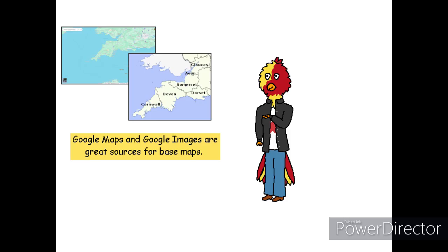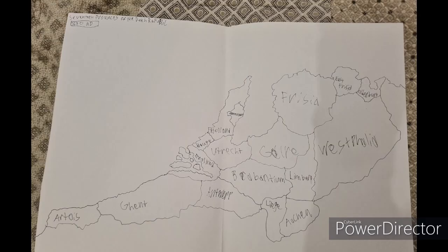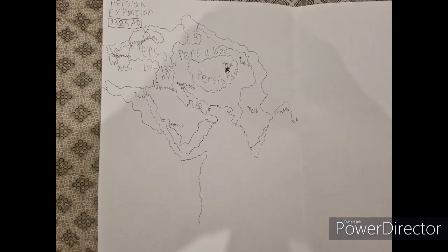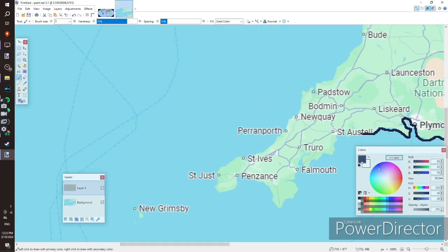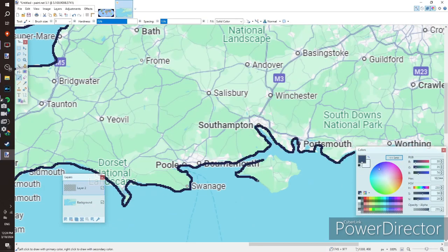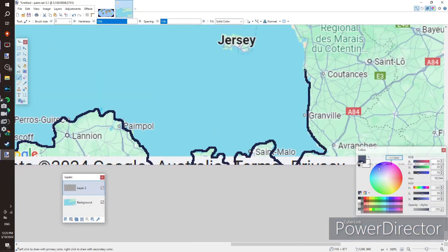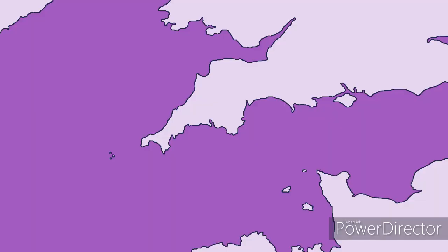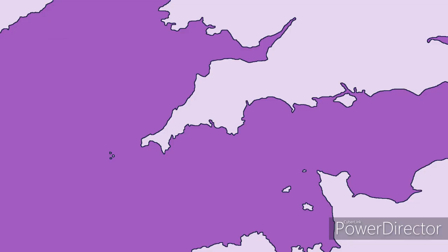To start, you'll need a base map, as you probably don't have a photographic memory of the world — trust me, I tried once. Now that you have your base map, create another layer above the map and trace the outline of the land using the paintbrush tool. I usually make the outline two to three pixels thick. Then, after colouring the land and the sea using the paint bucket, it's time to draw political borders.